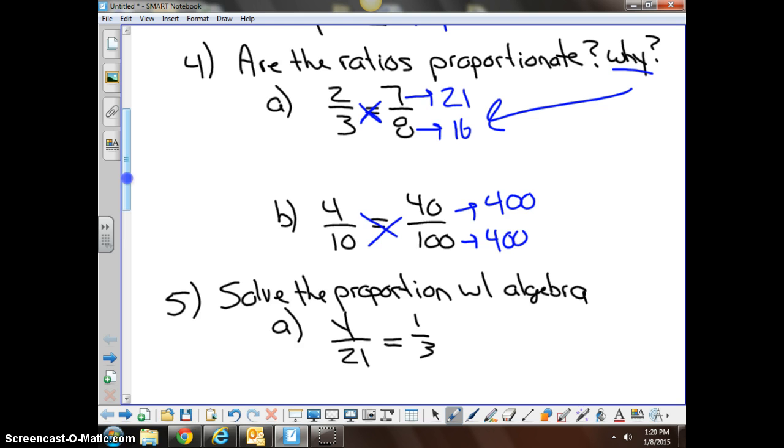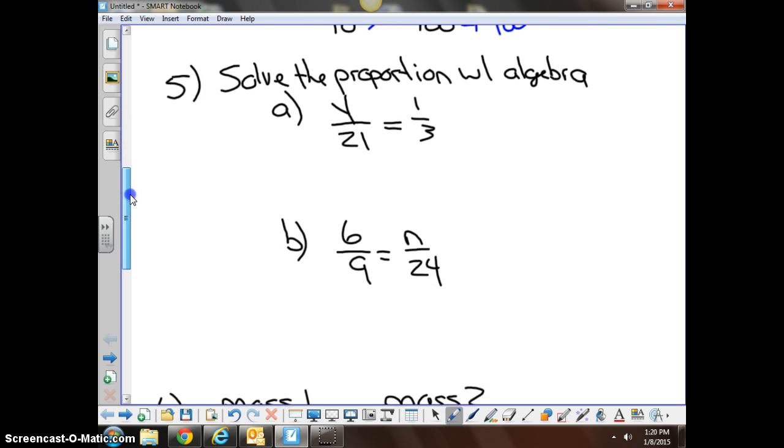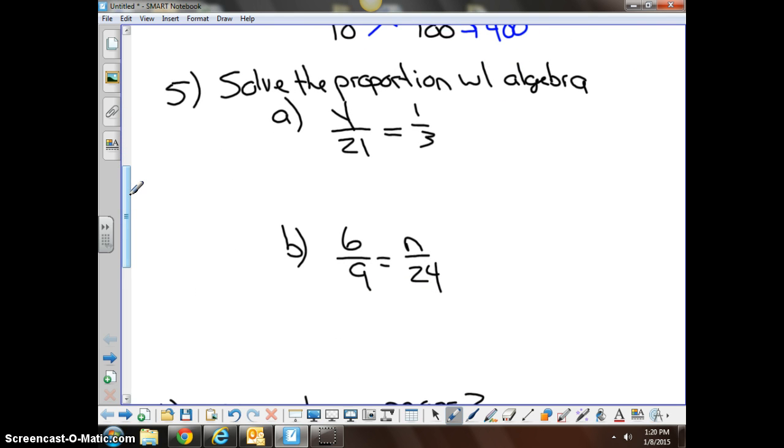Number five is where the algebra comes back in. It's been a while since we've done algebra, and this chapter does focus a little bit more on solving for a variable. The example would be y over twenty-one equals one-third, and there is a process for this, and you're going to start with cross products.